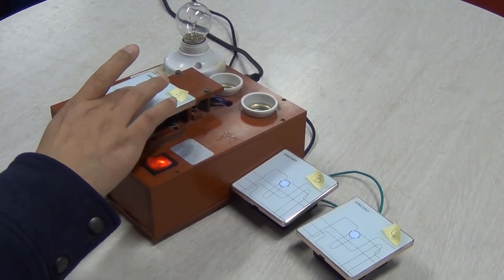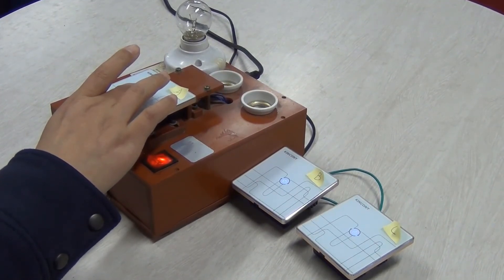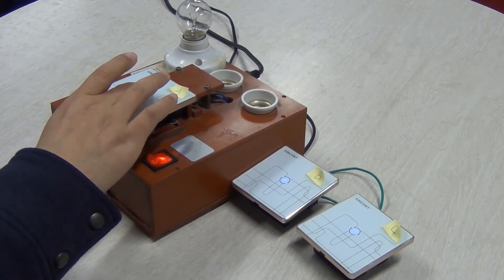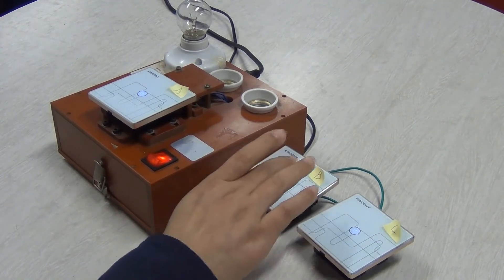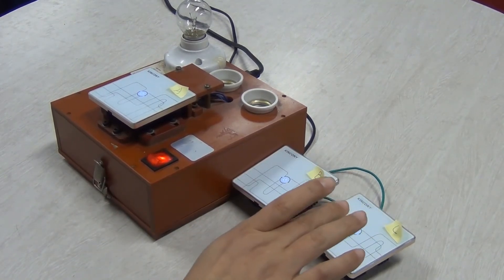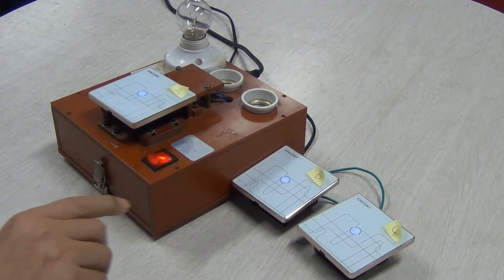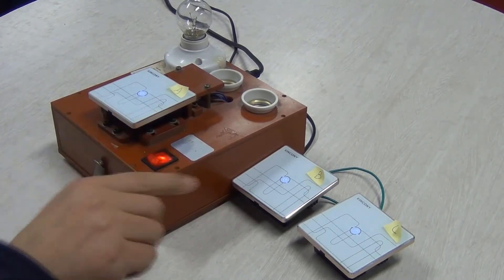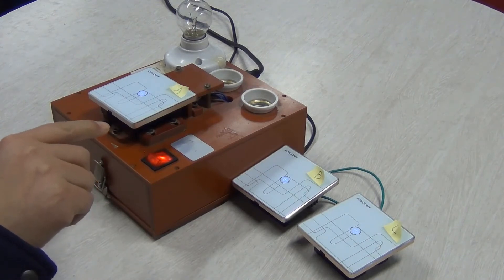Hold A until there are two beeps—one, two—then quickly release. Then press B and C within 10 seconds. After that, wait for a moment until there is one beep together from all the switches.